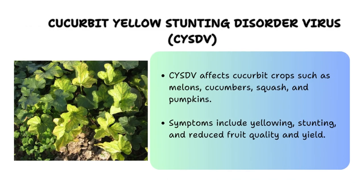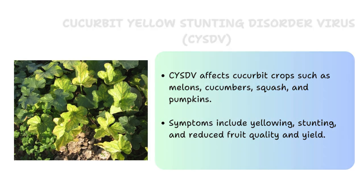Cucurbit Yellow Stunting Disorder Virus, also abbreviated as CYSDV, is also transmitted by whiteflies. This is a significant threat to cucurbit crops worldwide and is primarily transmitted by the silverleaf whitefly, also known as Bemisia tabaci. The virus causes yellowing and stunting of leaves, leading to reduced yields and fruit quality in cucurbit plants such as cucumbers, melons and squash.